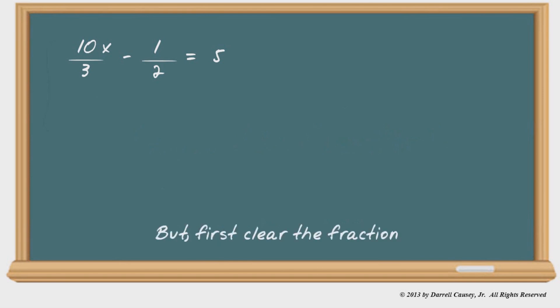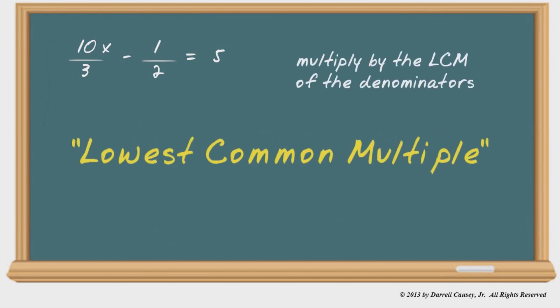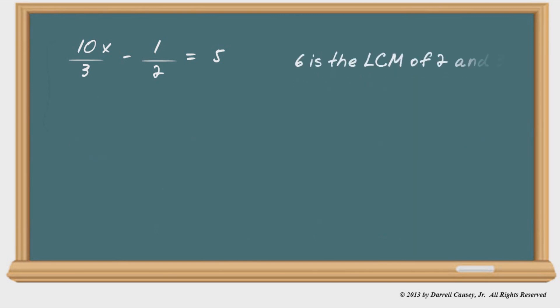So in order to clear the fraction, I must find the lowest common multiple. I must find the lowest common multiple of the denominators. All right. And since six is the lowest common multiple of two and three, and that's all the denominators there are that counts, let's multiply everything by six. And by multiplying everything by six, I will get 20x minus three equals 30. Now look at each one of those steps and notice that I multiplied six to every piece. Also be careful and watch your signs.